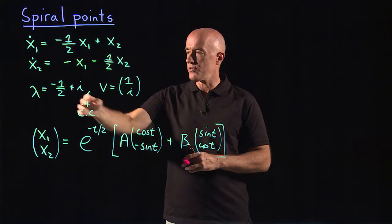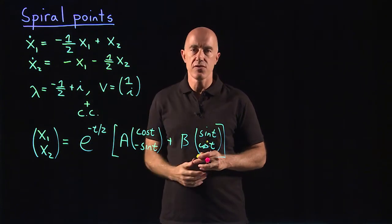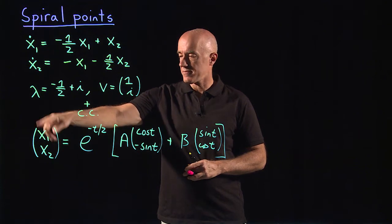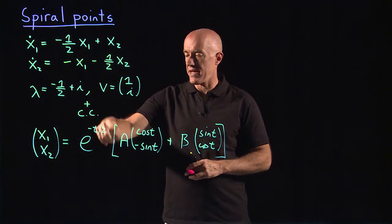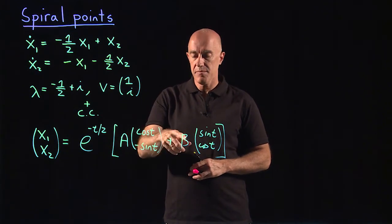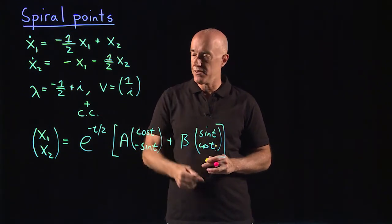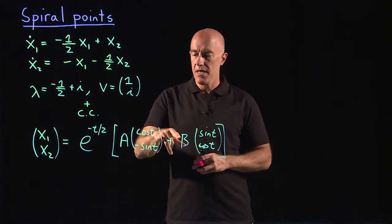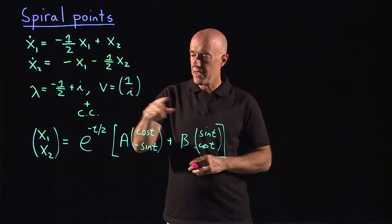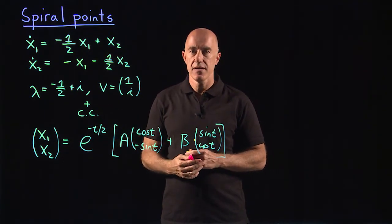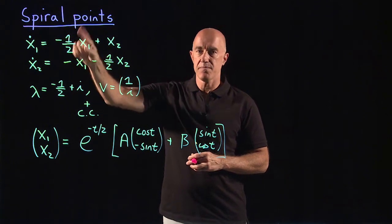If we write the solution by constructing two real solutions, we'll end up with x equals this decaying exponential times a times this cosine t minus sine t plus b times the sine t cosine t. This type of solution is circular, and then it's having an exponential decay. So this is why you get a spiral.